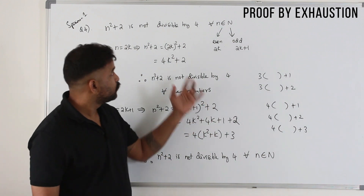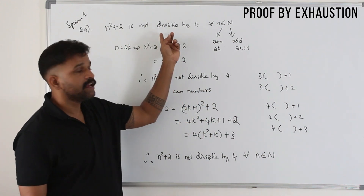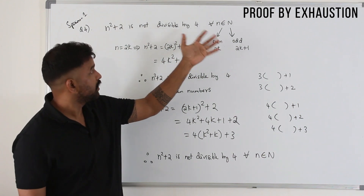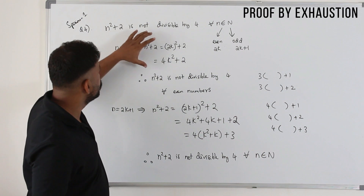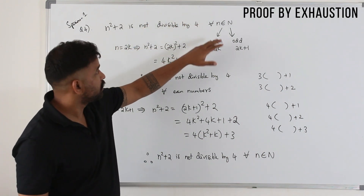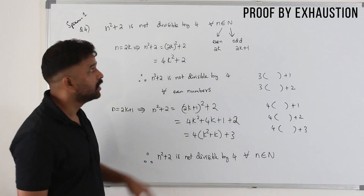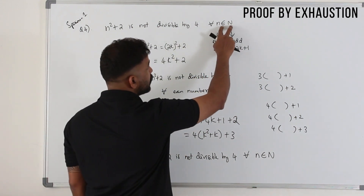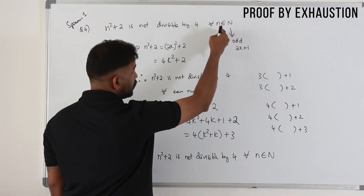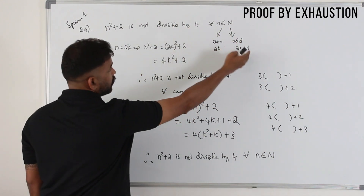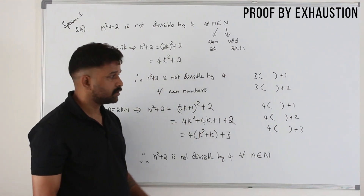Remember this: for proof by exhaustion, when they say to prove something, you have to prove it for each and every case given. When you have limited numbers, substitute them one by one. When you have an infinite set like all real numbers or natural numbers, divide them into two categories — even and odd — and prove the statement for each case.